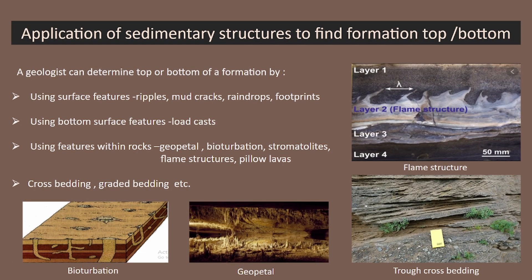Let's see how sedimentary structures can be applied to find formation top and bottom. A geologist can determine the top or bottom of a sedimentary formation using surface features like ripples, mud cracks, raindrops, and footprints, or bottom surface features like load cast. Other helpful features include geopetal structures, bioturbation, stromatolites, flame structures, pillow lavas, cross bedding, and graded bedding. For example, in a flame structure, the pointed part indicates the top of the formation.